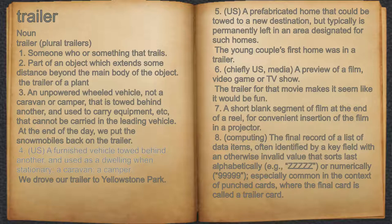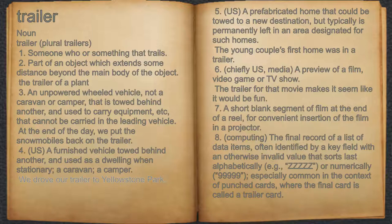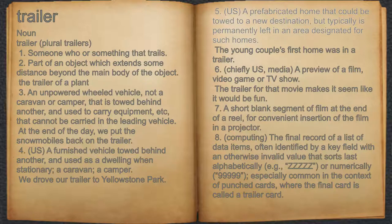4. A furnished vehicle towed behind another, and used as a dwelling when stationary; a caravan, a camper. For example, we drove our trailer to Yellowstone Park. 5. A prefabricated home that could be towed to a new destination, but typically is permanently left in an area designated for such homes. For example, the young couple's first home was in a trailer.